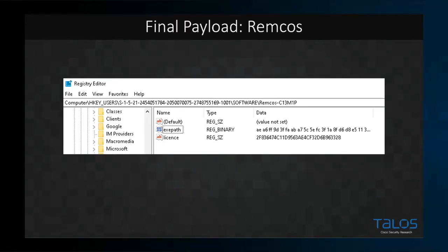Once that ASCII blob is decoded, the final payload was Remcos — a commercially available RAT. It's quite powerful and fairly easy to get a hold of. It's often marketed as monitoring software, but it's almost always used in a malicious context like this rather than a legitimate monitoring context.